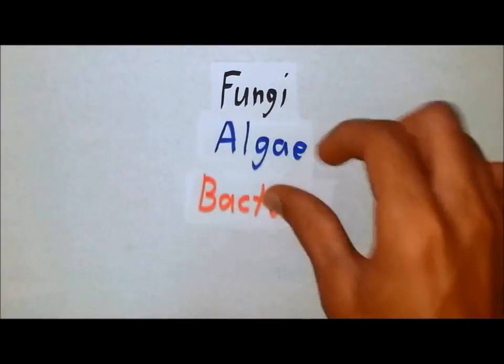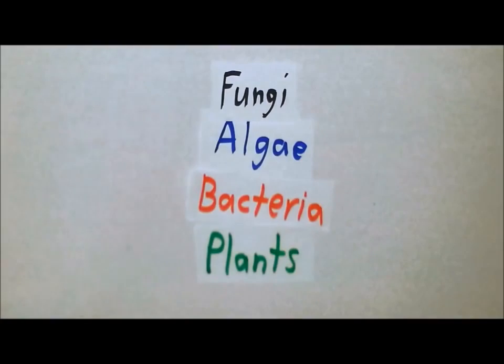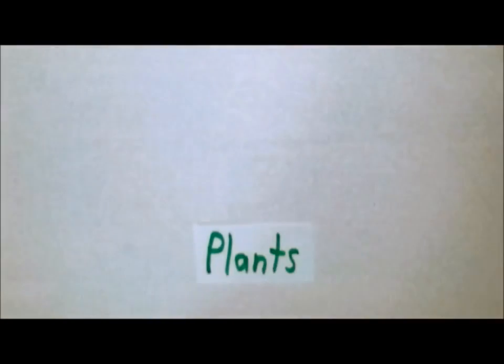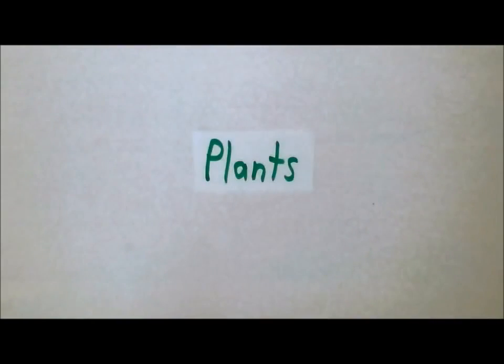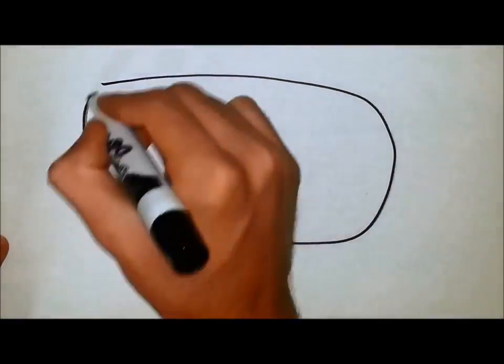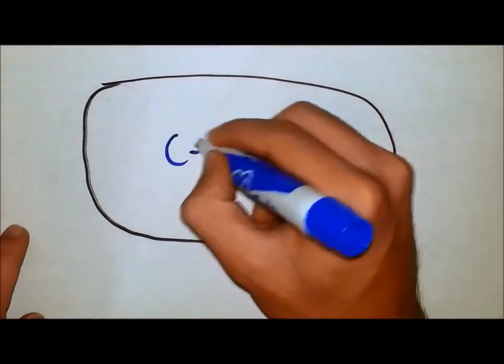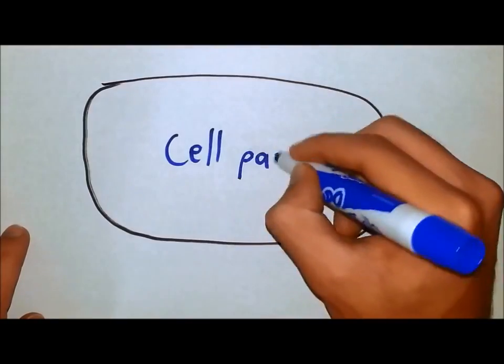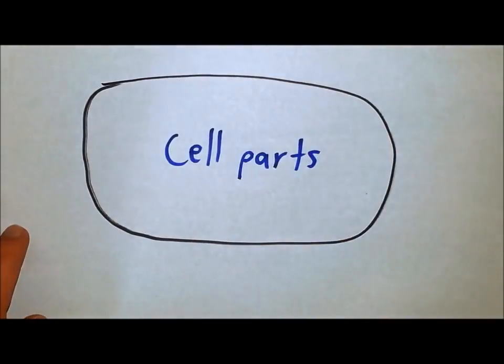The cell wall. It can be found in fungi, algae, bacteria, and plants. But we'll focus on the plants. The plant cell wall is a tough, flexible, and sometimes rigid layer that surrounds the cell membrane and its cell parts.